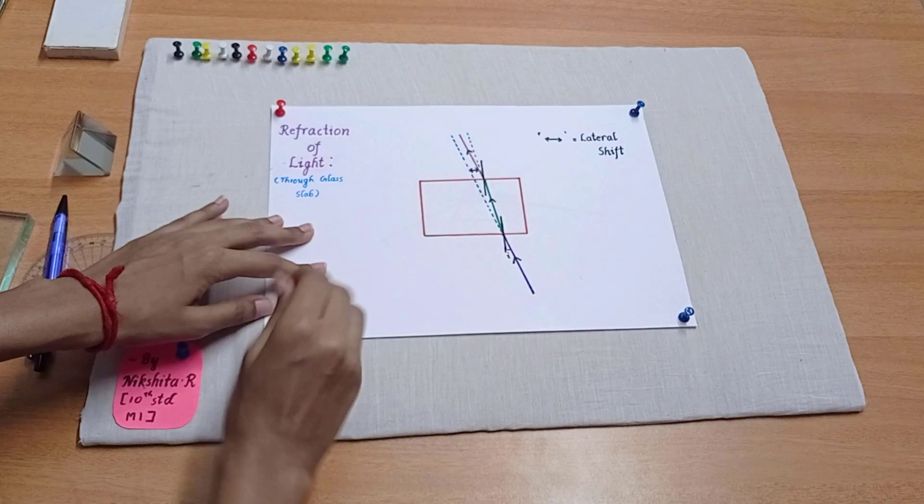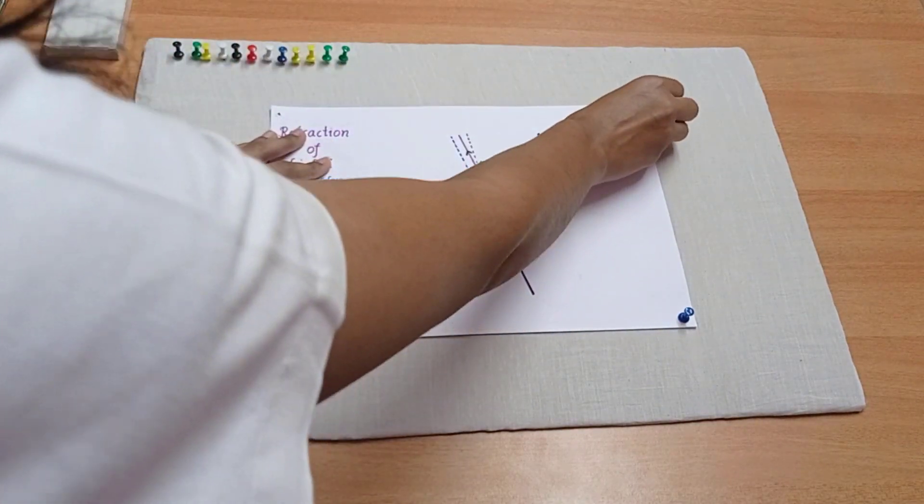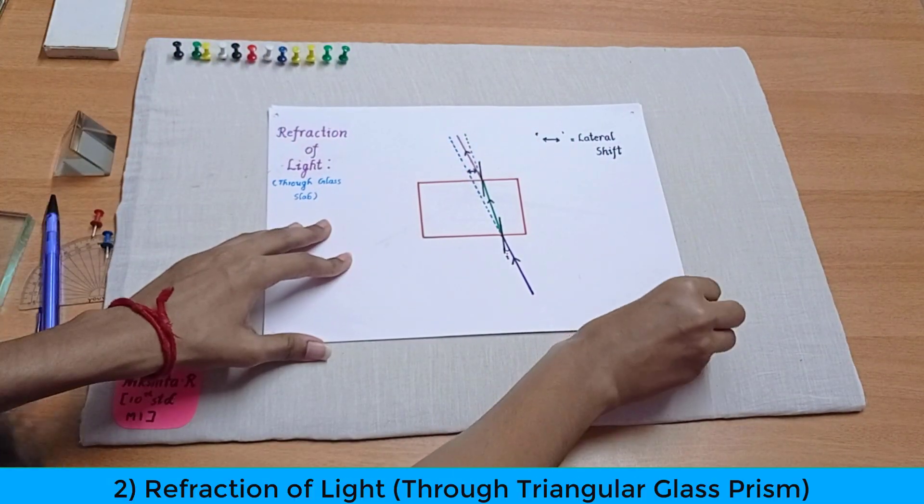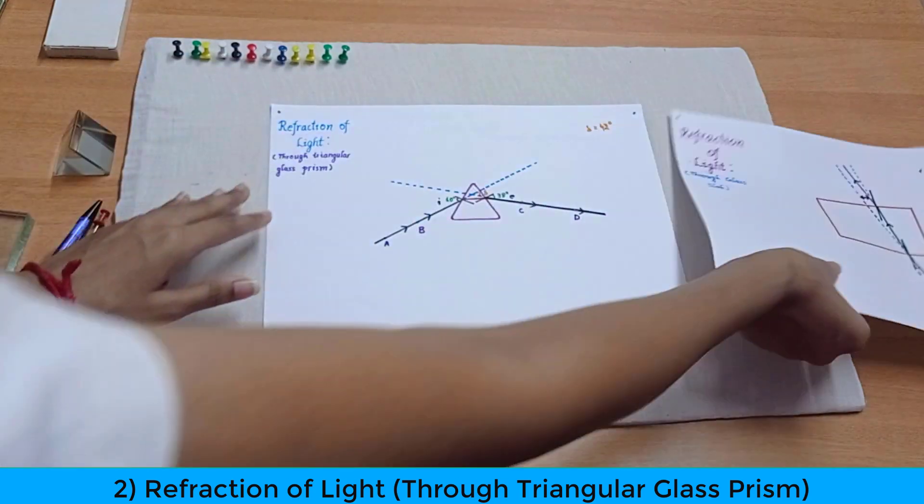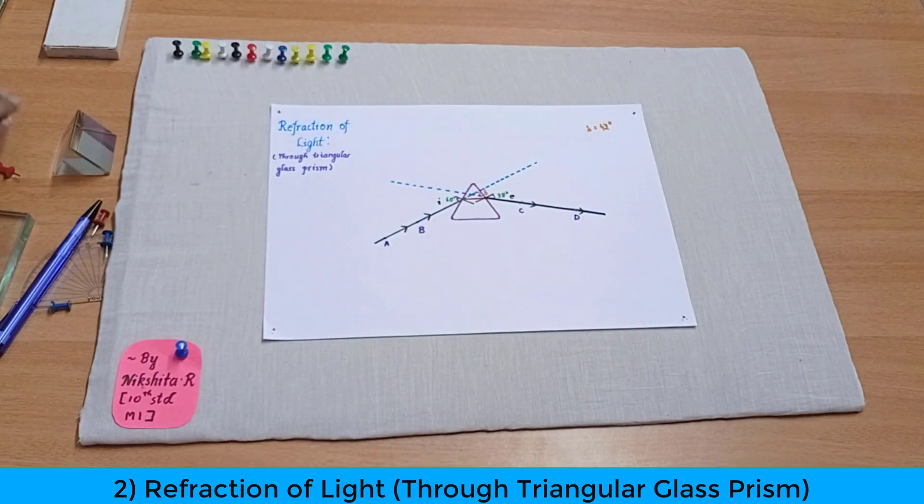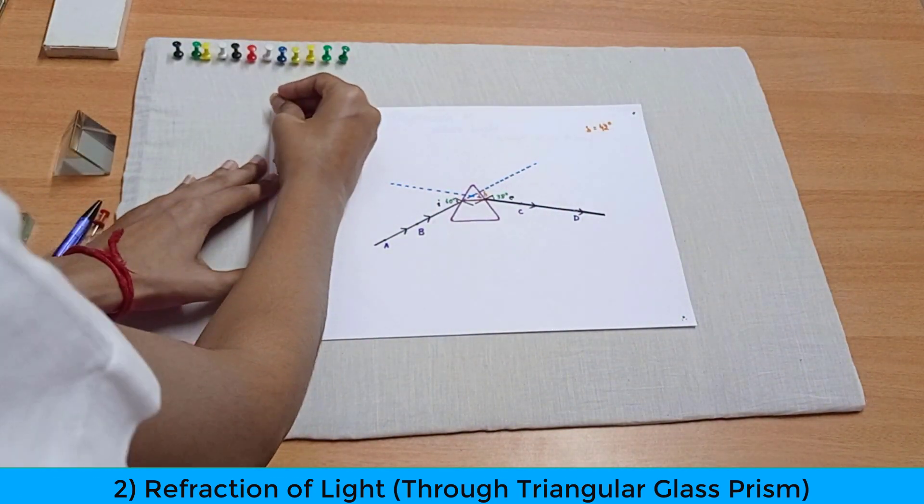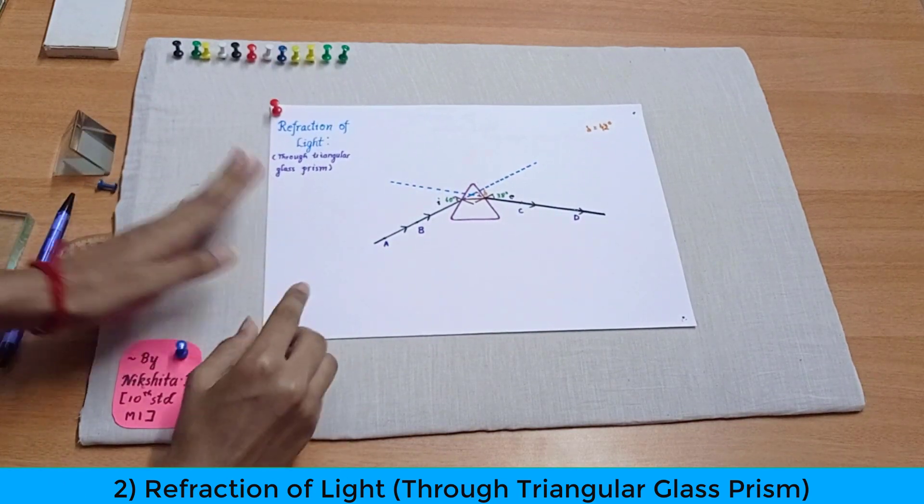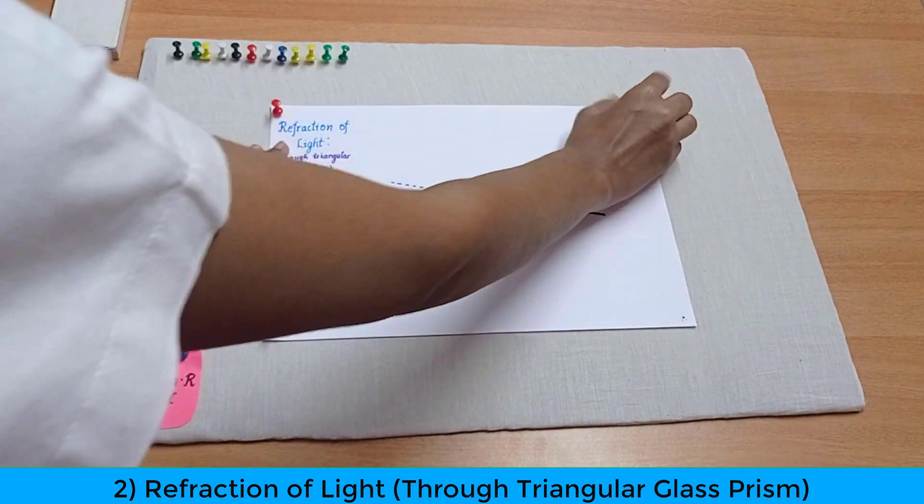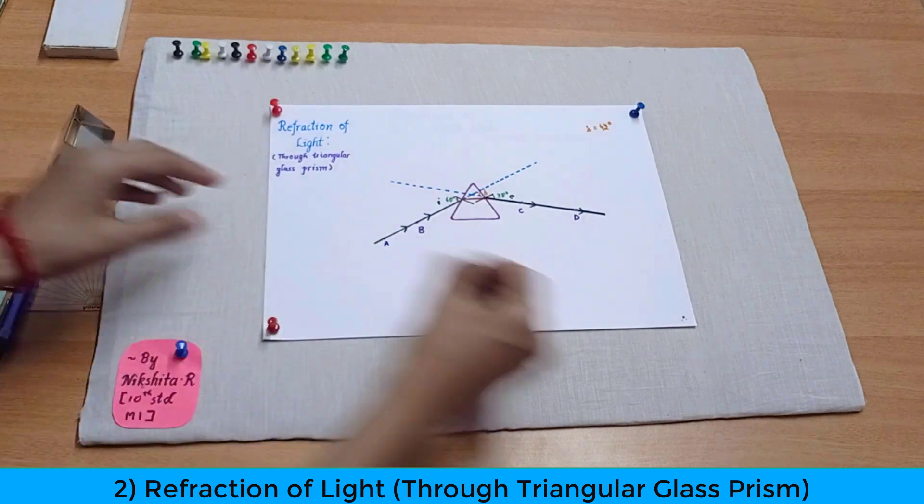So now let's move on to the second activity which is refraction of light through a triangular glass prism. And now I'll be again fixing these four pins over here to make sure the paper doesn't move because counting the angles in these activities are very important.